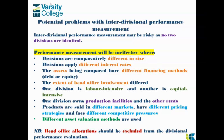Potential problems with interdivisional performance measurement. The problem with comparing different divisions is that not all divisions are the same size. So obviously if you're running a bigger division, your performance is going to look better because your profits are bigger and you have bigger revenue. Then different interest rates — one manager might have been able to negotiate a better interest rate due to their relationships.